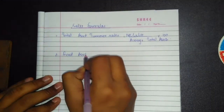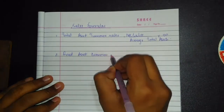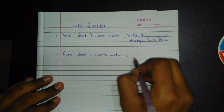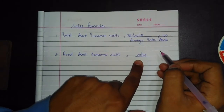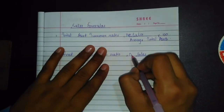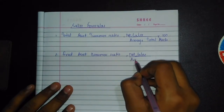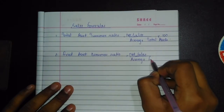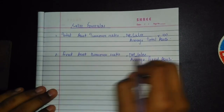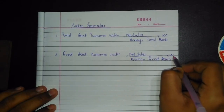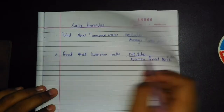Fixed Asset Turnover Ratio equals Net Sales divided by Average Fixed Assets. The same logic about multiplying by 100 applies here — only do so if the ratio is expressed as a percentage.